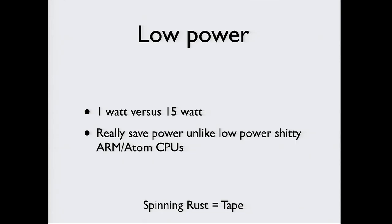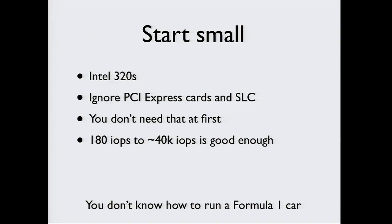It's the best way you can save power, and you need like one SSD instead of 50 hard drives. One SSD is about 44,000 IOPS and one hard drive is 180 IOPS — do the math on how much you can save. Start small: just get Intel 320s. Don't get fancy SLC cards for tens of thousands of dollars — you don't need that. You can't drive a Formula One car when you're currently on a bicycle. Just get a Ferrari — around a thousand bucks, 600 gigs.